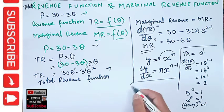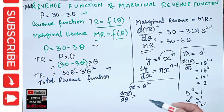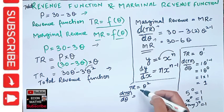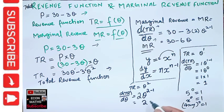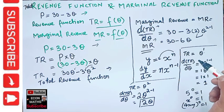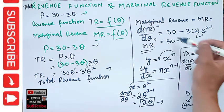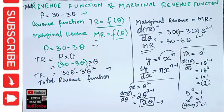Similarly, for the derivative of Q squared: if total revenue equals Q squared, then dTR/dQ uses the power function rule — we take the exponent 2 as the coefficient, giving 2 times Q to the power 2 minus 1, which equals 2 times Q to the power 1, or simply 2Q. So the 2Q in our marginal revenue comes from this rule. And the 30 in the derivative comes from 30 times 1, as I showed earlier. I hope that makes it clear. Thank you.